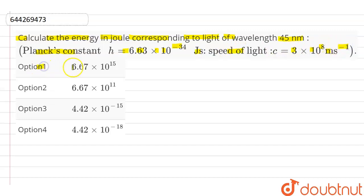Our first option is 6.67 × 10^15, our second option is 6.67 × 10^11, third option is 4.42 × 10^-15, and option fourth is 4.42 × 10^-18.